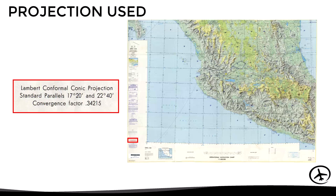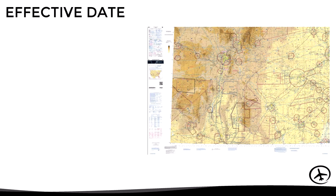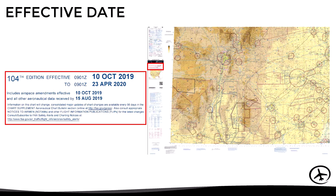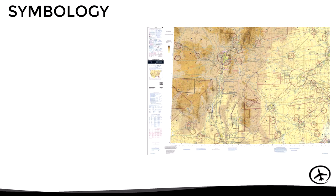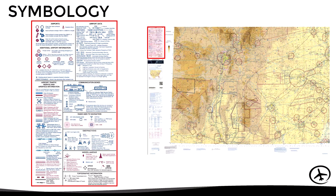Then we can see the projection used to develop the chart, which in this case is a Lambert conformal conic projection with the standard parallels being 17 degrees 20 minutes north and 22 degrees 40 minutes north. Then another important element is the effective date, which will determine the validity of the information published in the chart. For example, the aeronautical information published in this particular chart is valid from October 10, 2019 to April 23, 2020.